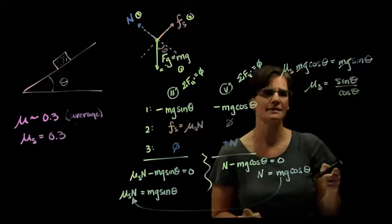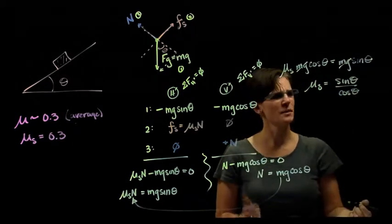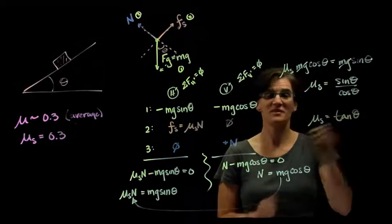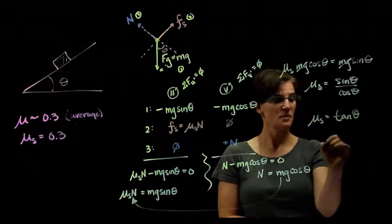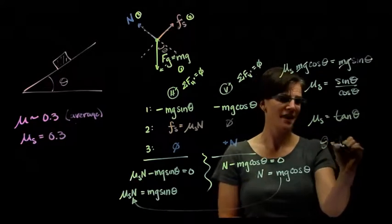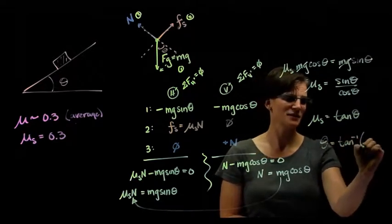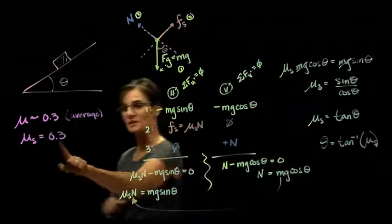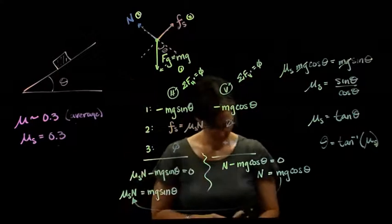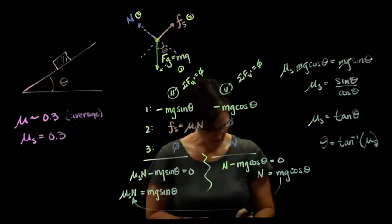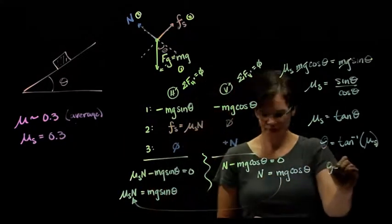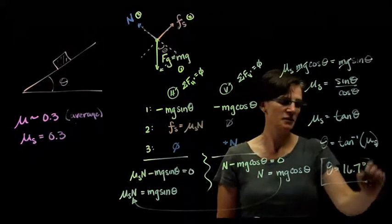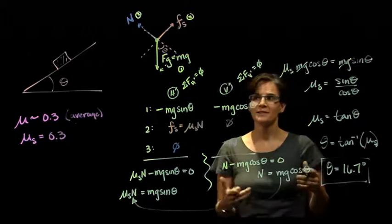And I end up with μ_s equals the sine of theta over the cosine of theta. So, what is that? What's the sine of theta over cosine of theta? That's the tangent of the angle. So, in order to get the angle, all I have to do is take the inverse tangent of my coefficient. So, if my coefficient is 0.3, the inverse tangent of 0.3, my angle will equal 16.7 degrees for, I think that was the plastic case.